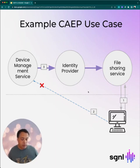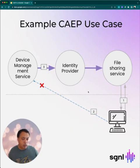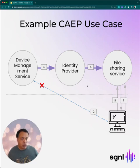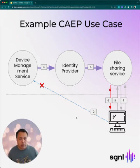The identity provider is going to verify its policies about that user and that device, and it will determine that these applications have sessions open with this device and that, per policy, those sessions need to be revoked. So it sends a session revoked event to the file sharing service. When the user then requests access, because that session is revoked, the user is going to get an access denied or a request to re-login using the identity provider. That's basically how CAPE works.